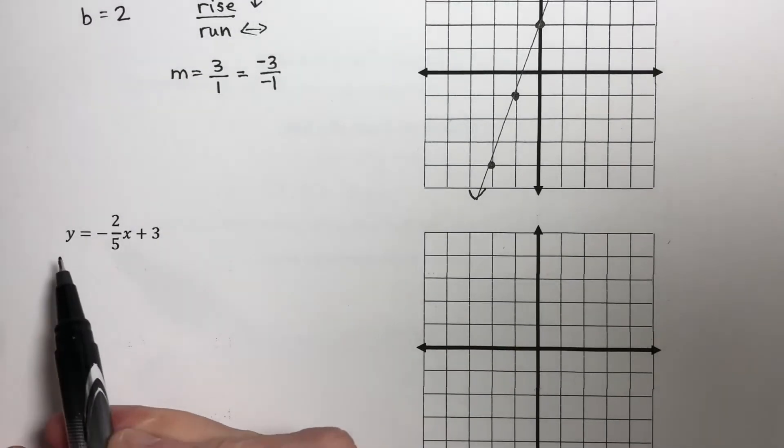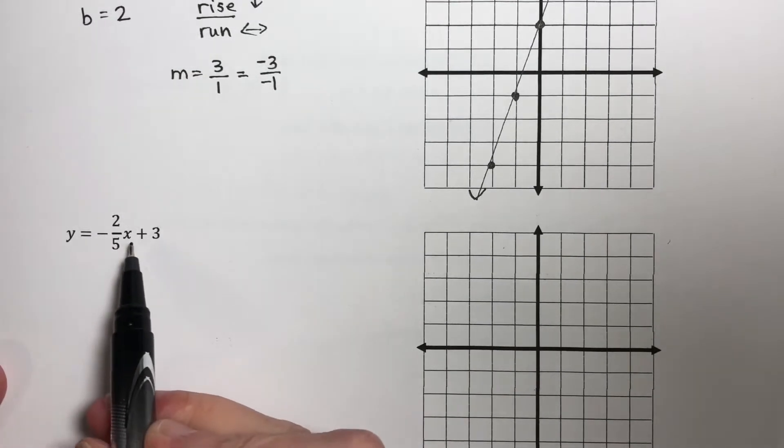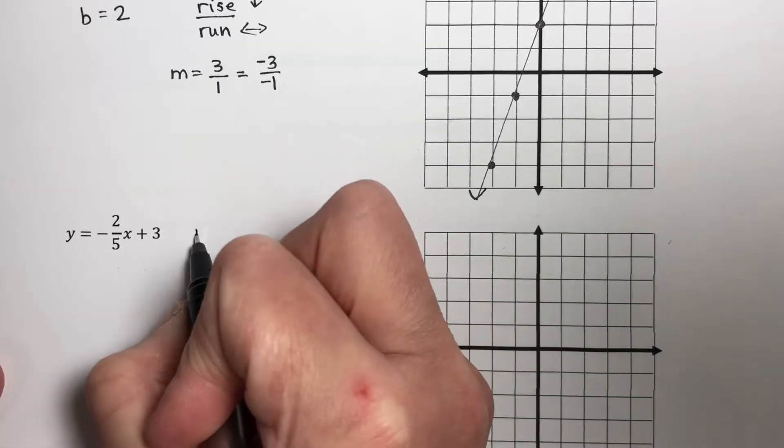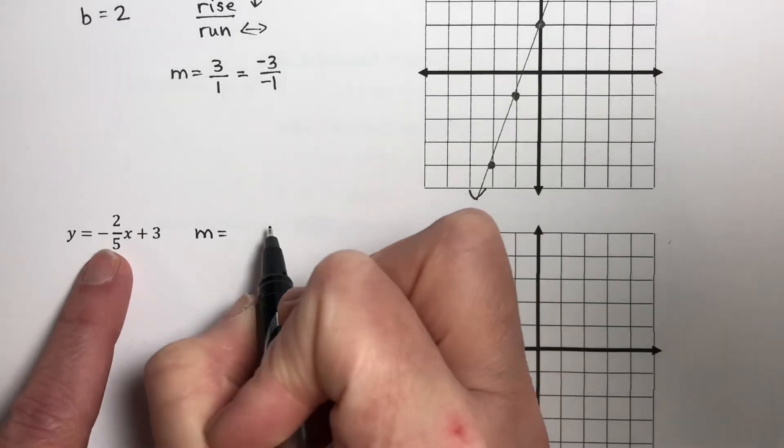So let's try this one. Y equals negative 2 fifths X plus 3. My slope is negative 2 fifths.